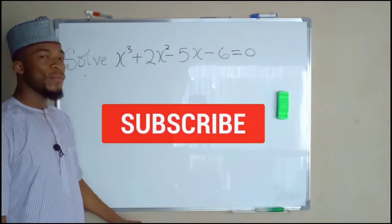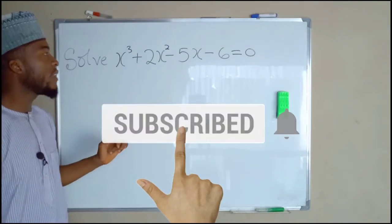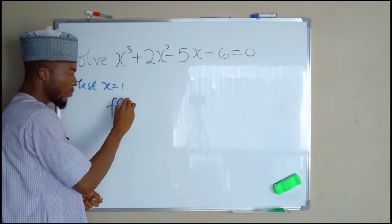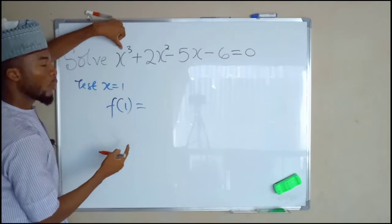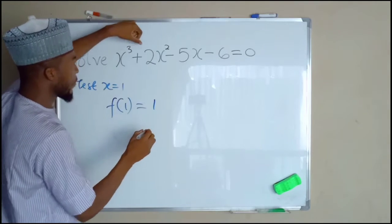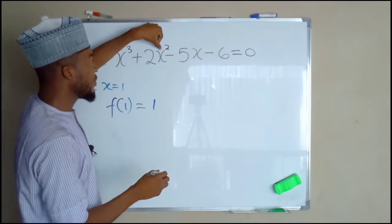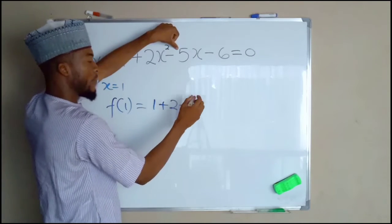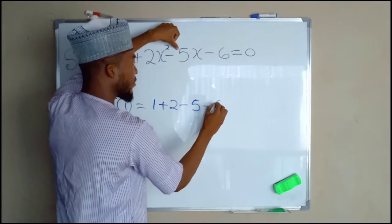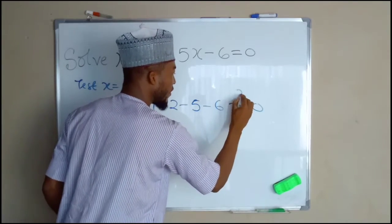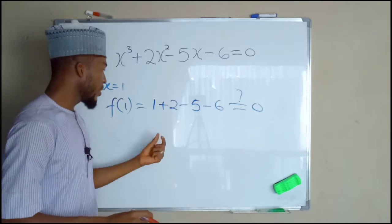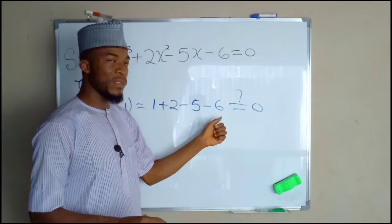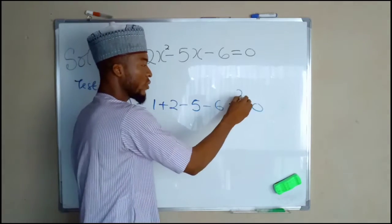Okay, first of all, let us test 1 and see whether it is going to satisfy this equation. So f of positive 1, this is equal to 1 to the power of 3 is 1. Now, 1 to the power of 2 is 1 times 2 is still 2 minus 5 times 1 is 5 minus the constant. If this equal to 0, this is what we want to test for. 1 plus 2 is 3, 3 minus 5 is negative 2, negative 2 negative 6 is negative 8, which is not equal to 0.